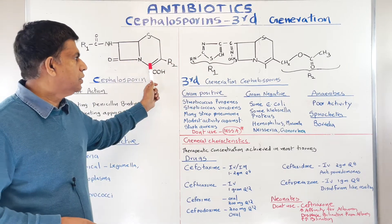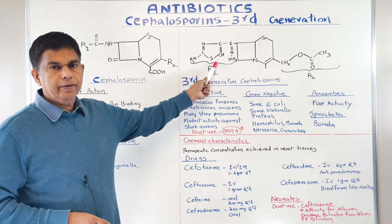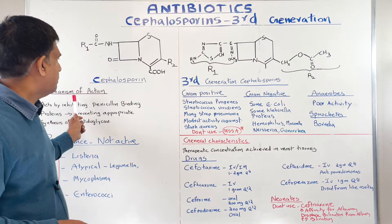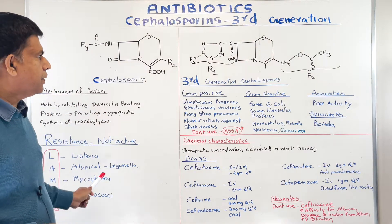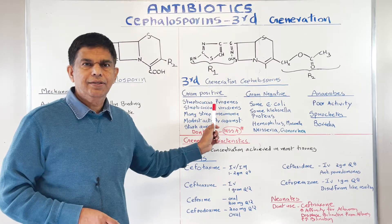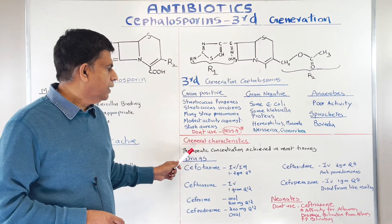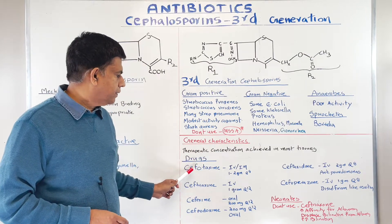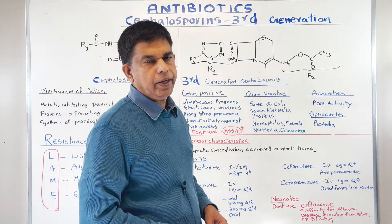Let's look at our whiteboard and how we're planning to approach this. We're talking about cephalosporins today, third generation cephalosporins. We're going to look at the structure of cephalosporins versus third generation — the difference. Then we're going to talk about the mechanism of action, resistance, coverage, activity — gram positive, gram negative, anaerobic coverage — and then general characteristics, the drugs, and we'll finish it up.